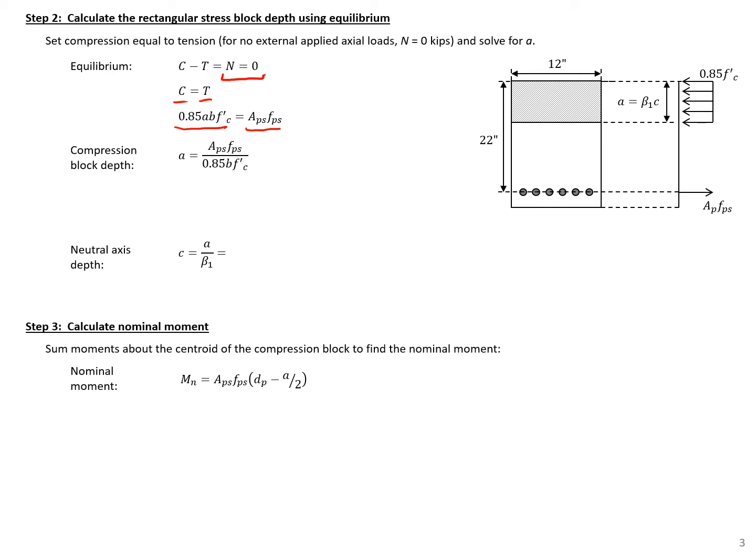A equals the total prestress area of 0.918 square inches times the strand stress of 252 ksi, divided by 0.85 times 12 inches times 5 ksi, giving us A equal to 4.54 inches.